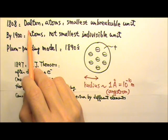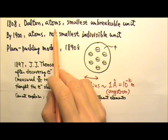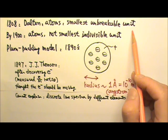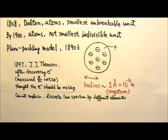In 1808, English natural philosopher John Dalton stated that atoms were the smallest unbreakable unit of matter, and that was the beginning of atom theory.